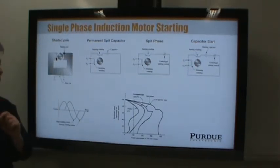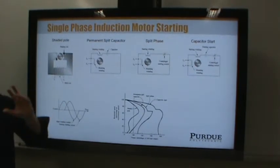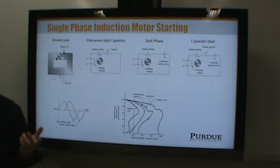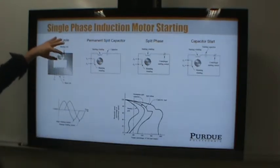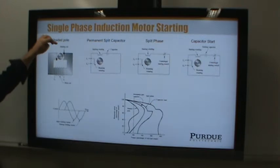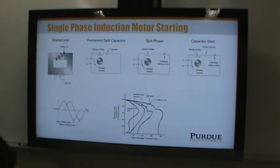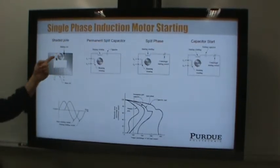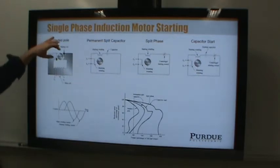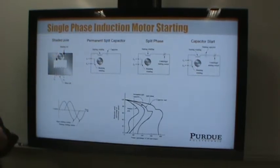When you have single-phase current, you basically can't get the motor to start on its own — it needs some help. By including these shaded poles, it changes the magnetic field so that you can get the rotor to start. What that means is that these shading coils end up sort of dragging the rotor once it's going.